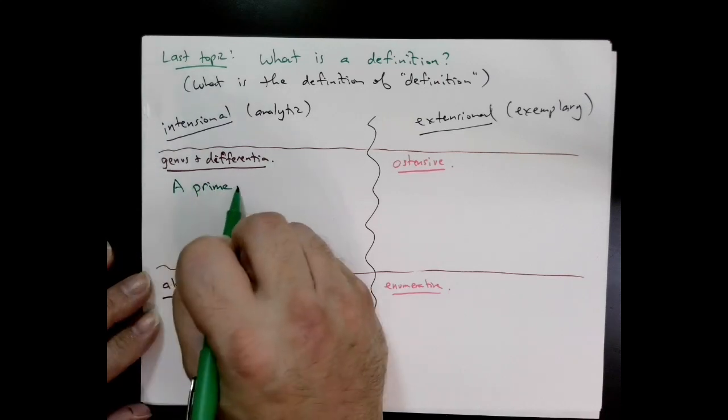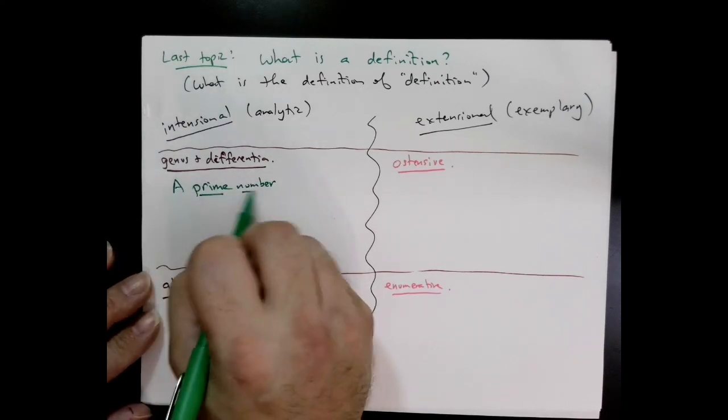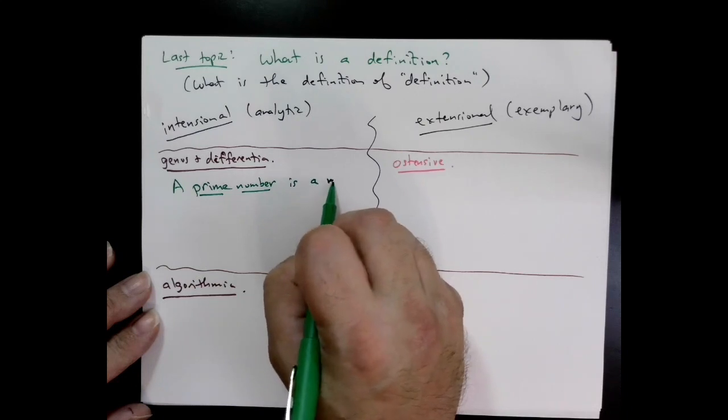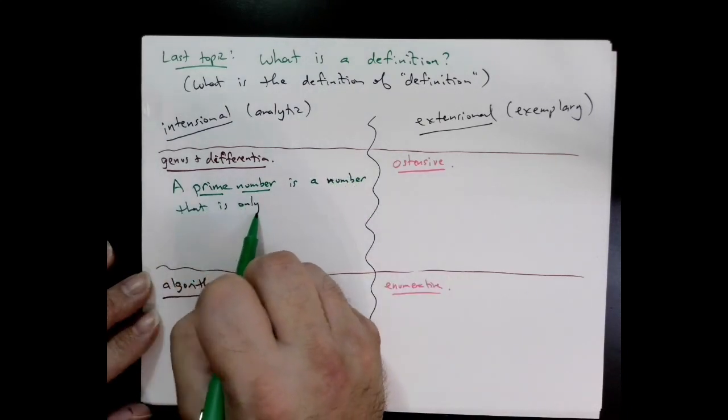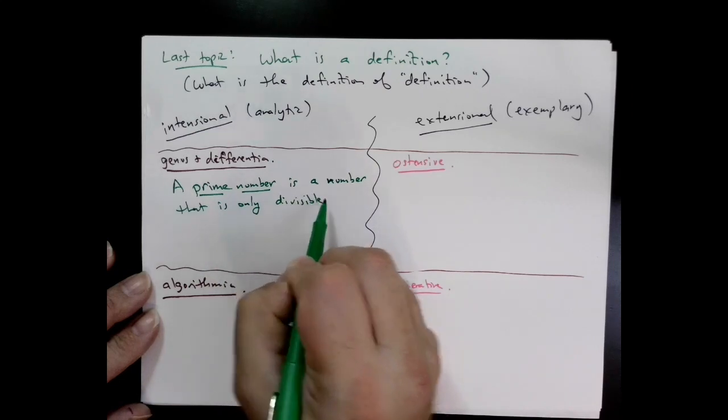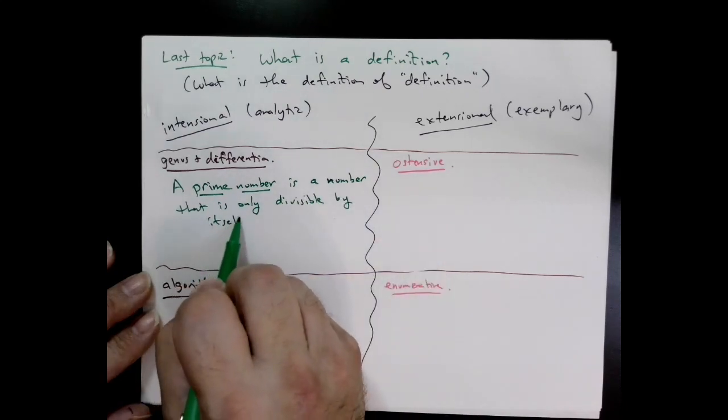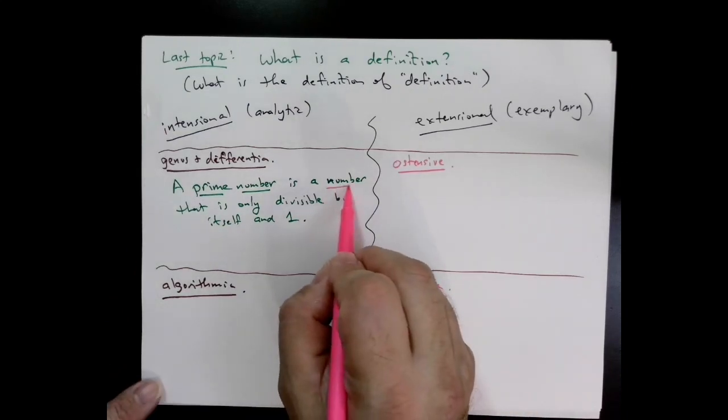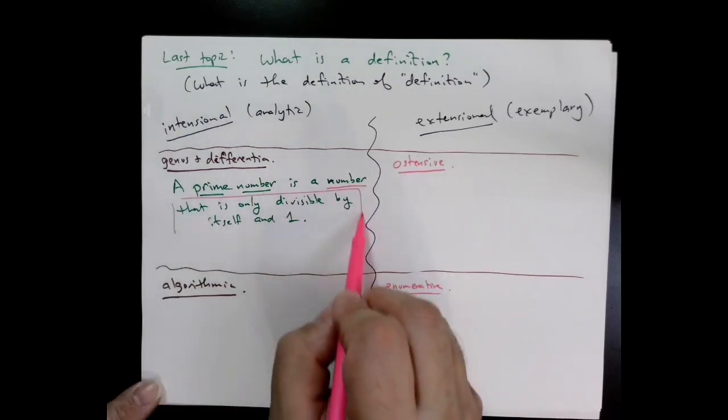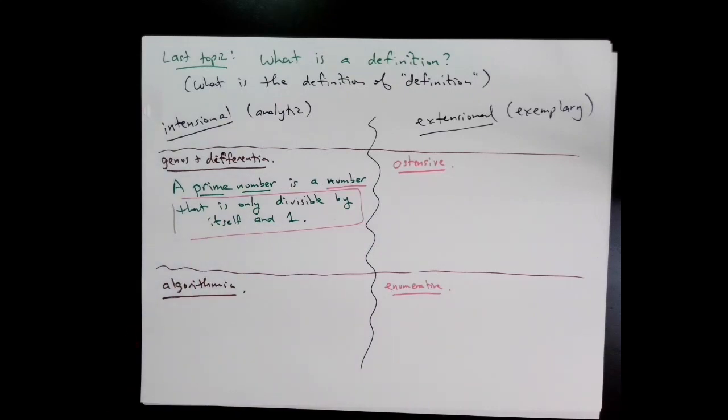Let's give some very specific examples. A prime number is a number that is divisible by itself and one. That's genus and differential. Genus means family, so first we say a prime number is a number—that's step one. Then step two is but not all numbers—we make a differential between some numbers. This type of definition has a strong advantage of being very precise, but it has a weakness: we always have to have a definition for the larger class that sits inside.